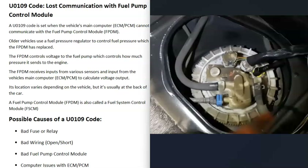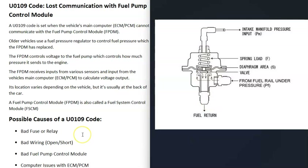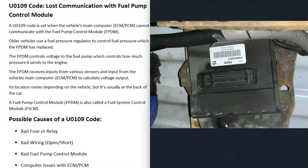Basically, there's a fuel pump that's supplying fuel up to the engine, and it needs to be sending out the correct pressure so that the fuel injectors can eject fuel into the cylinders. To get the right fuel pressure, older vehicles used a fuel pressure regulator — a simple mechanical device that would control the fuel pressure up at the fuel rail where the fuel injectors are located. But newer vehicles replace this with what's called a fuel pump control module.